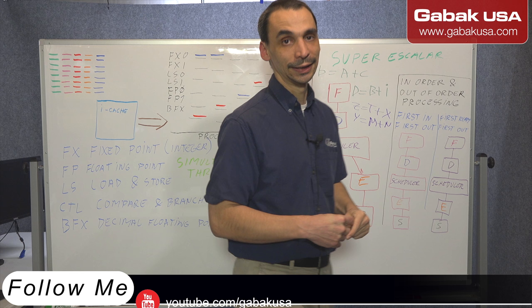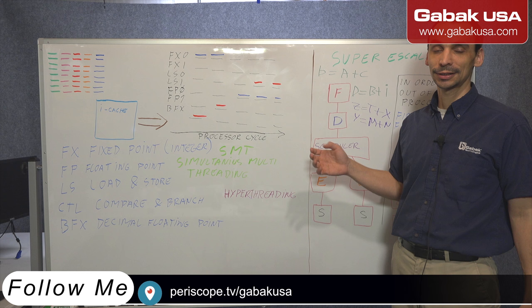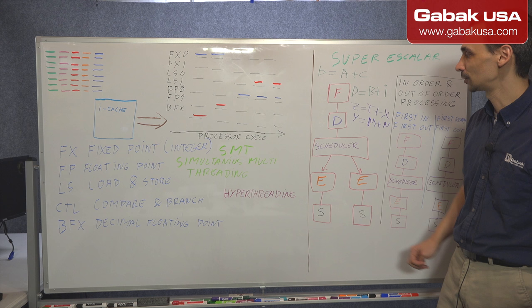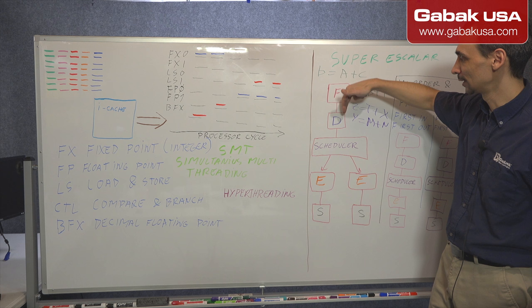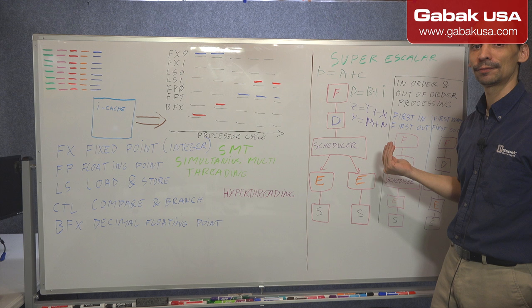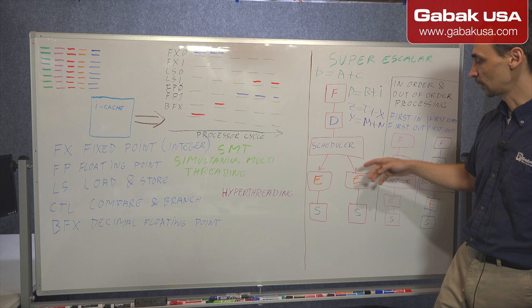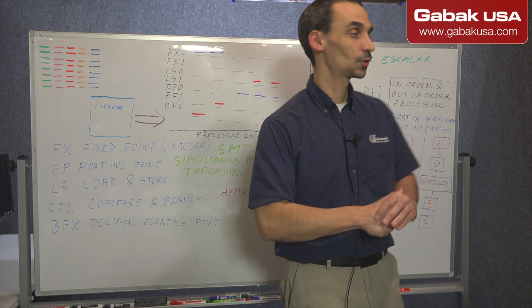In the first units and the first processors, you have these pipeline stages — fetch, decode, execution, store — and the first instruction comes through in order. If you have another instruction that needs to run at the same time, you cannot do that because you have just one of each unit. So you cannot process many instructions at the same time.